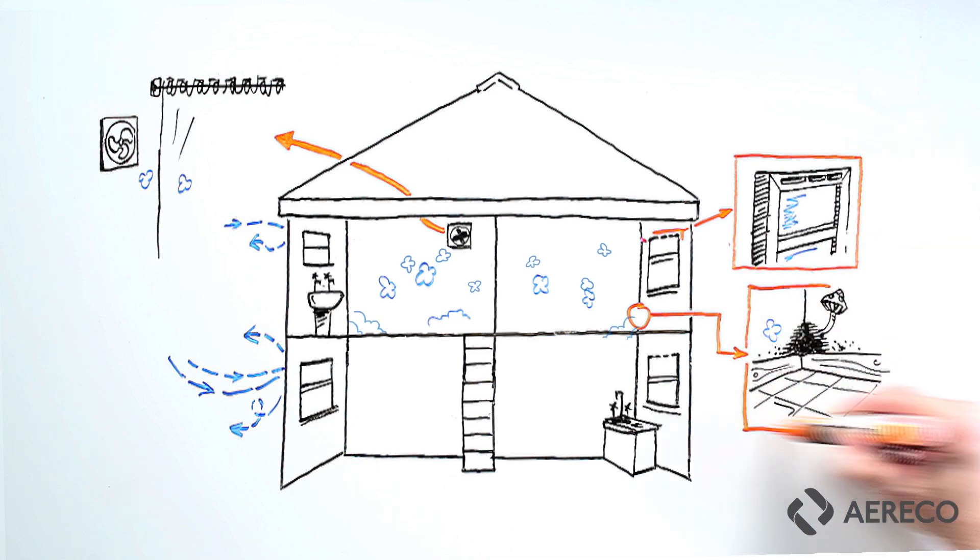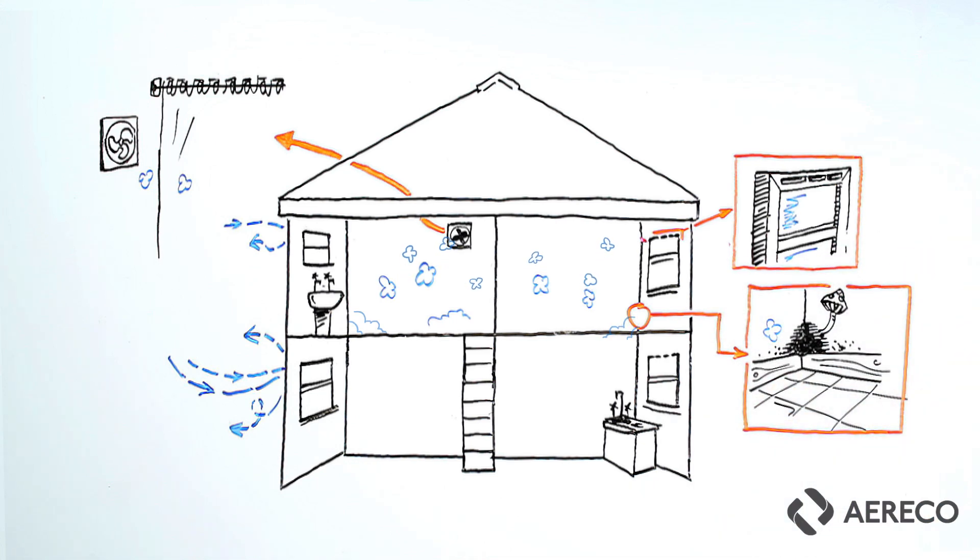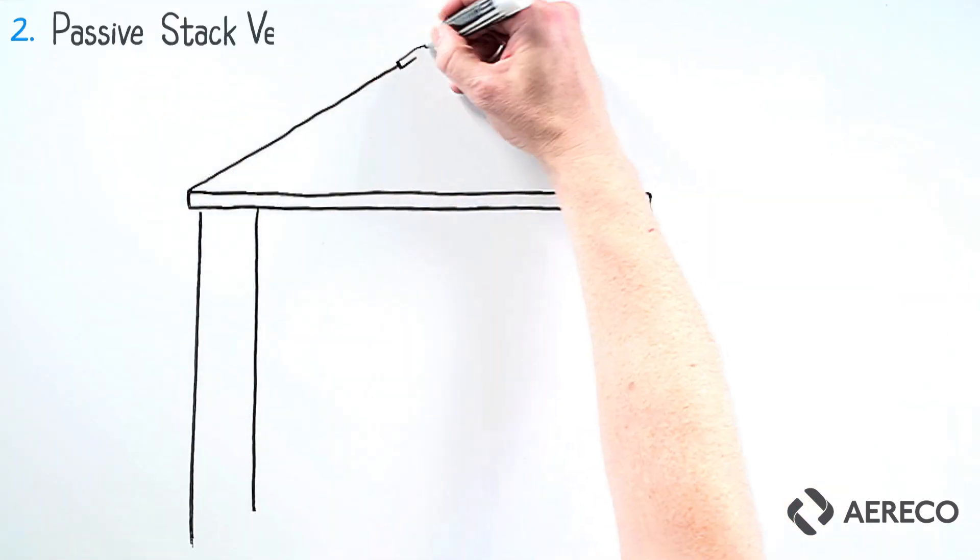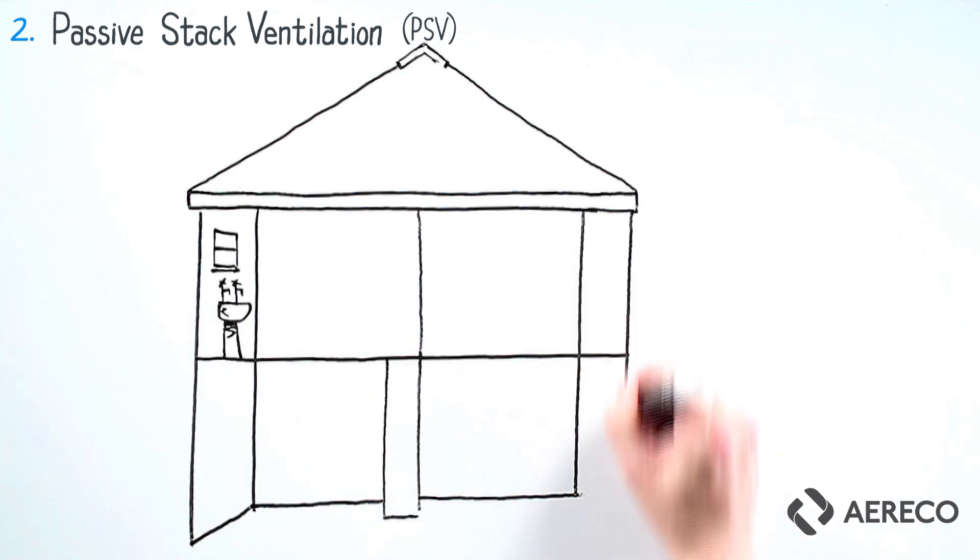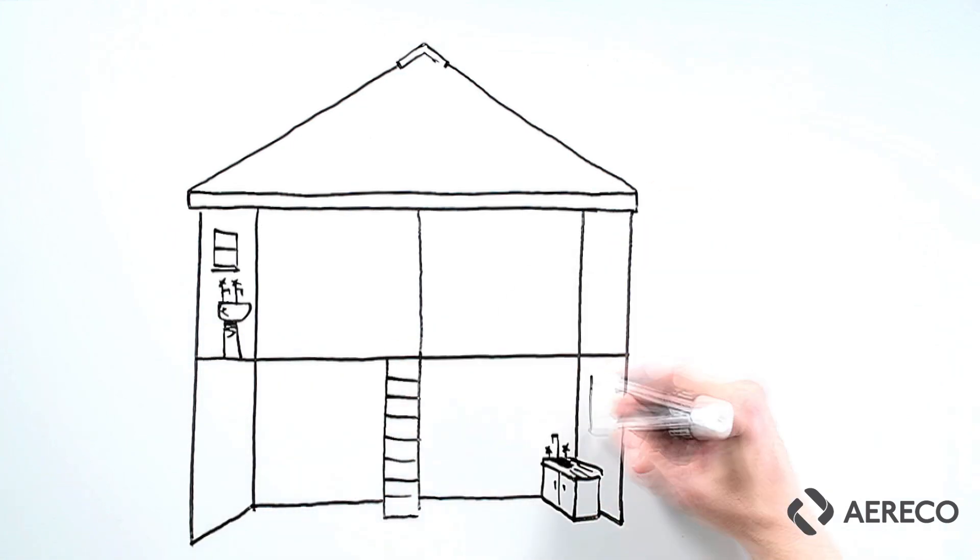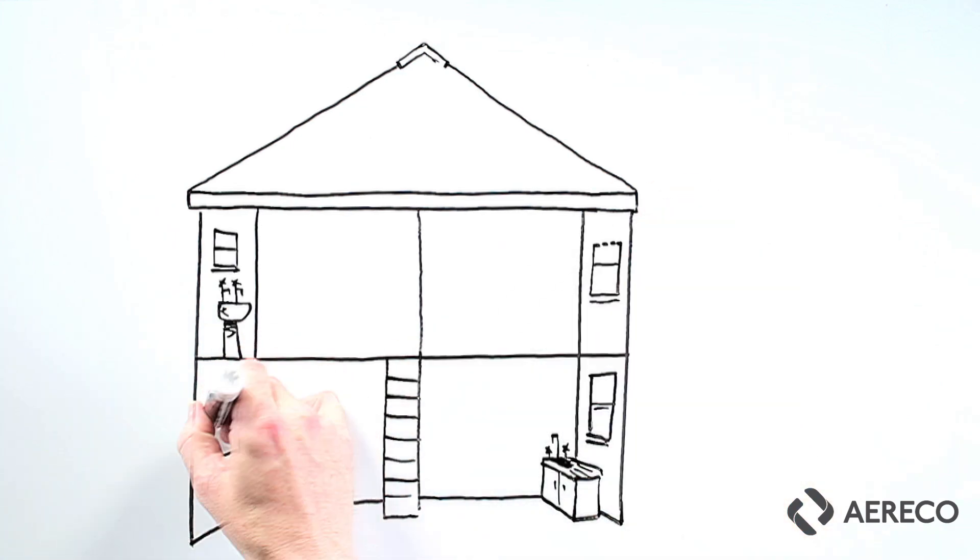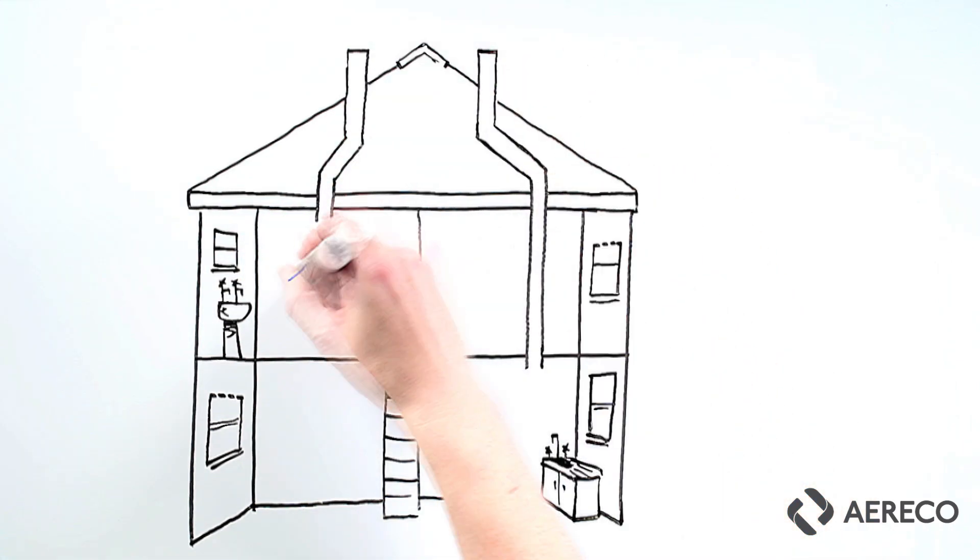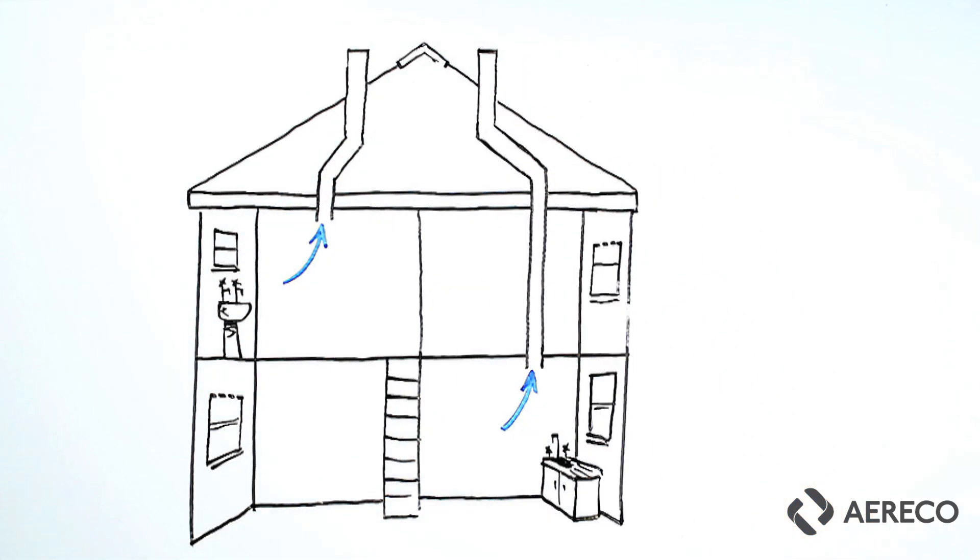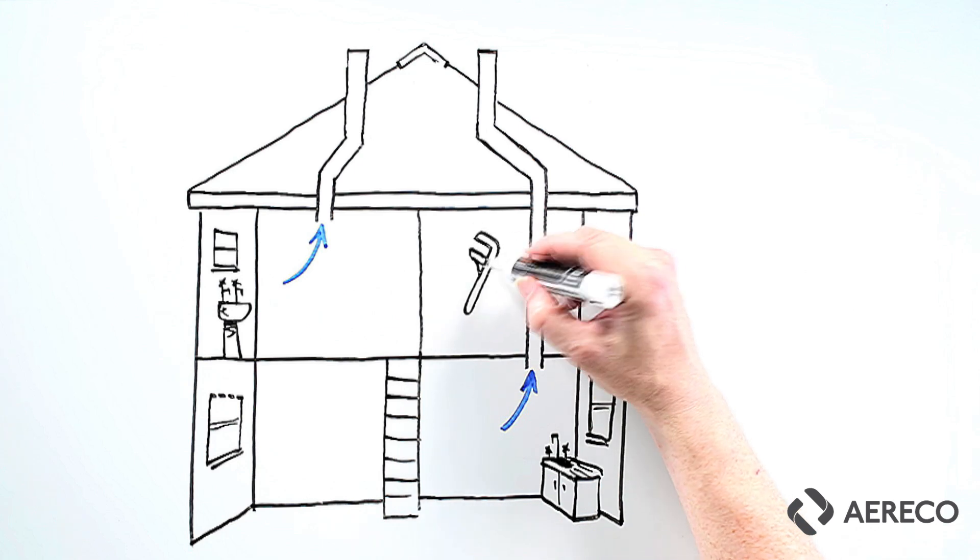Two: passive stack ventilation or PSV. Think of a chimney from a wet room in the building to the roof and you have a passive stack. These replace extract fans and provide a natural, low-energy way of extracting moisture at source. And because it has no moving parts, it requires very little maintenance.